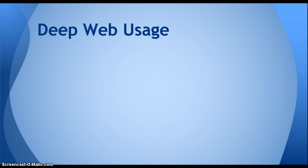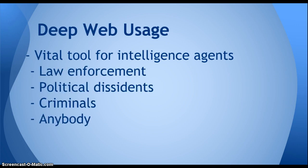So what can the deep web be used for? The deep web can be a vital tool for intelligence agents — it is used to enforce the law. For example, the police can find who is trafficking drugs or children, or who is selling assassination services, and this helps intelligence agents enforce the law. Of course, criminals and anyone else can also use the deep web.